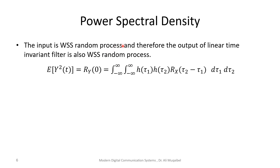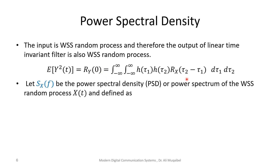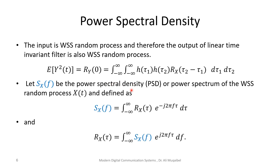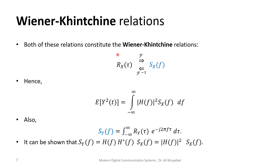If the input is a wide-sense stationary process, the output of a linear time-invariant system will also be wide-sense stationary. The expected value of y², which is the autocorrelation at τ = 0, leads us to define capital S in the frequency domain — the power spectral density (PSD). It is the Fourier transform of the autocorrelation. This relation is known as the Wiener-Khinchin relation.